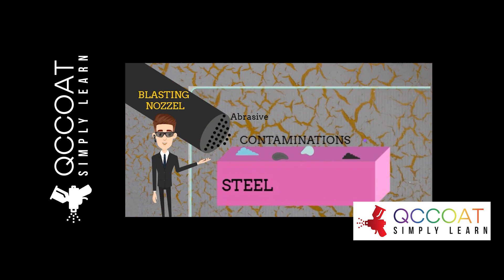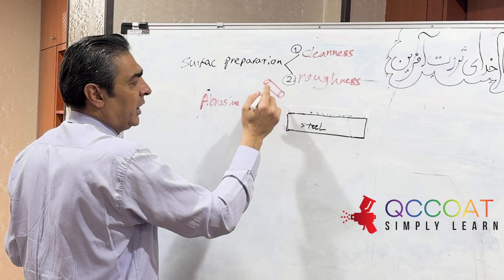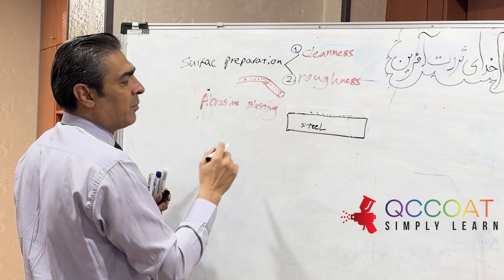Surface preparation refers to all actions performed before painting operations to achieve three main goals: first, remove all factors that reduce the adhesion of paint to the substrate; second, create conditions and factors that increase the adhesion of paint to the surface; third, ensure that the bond between the paint and the substrate is not broken or destroyed due to the presence of active ions, chlorides, and sulfates.